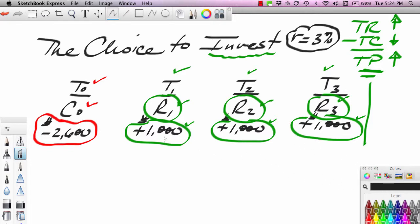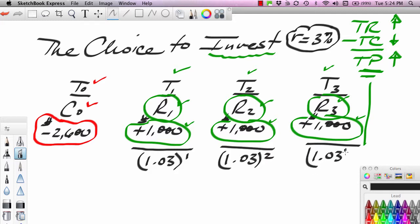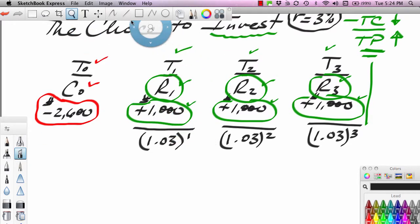How do we take a future value and move it back into the present, convert it to a present value? We have to divide the future value by its corresponding interest rate factor. If the interest rate is 3%, this interest rate factor will be 1.03 to the first power because this return is one year out. This return is two years out, so it would be 1,000 divided by 1.03 squared, and this would be 1,000 divided by 1.03 cubed.